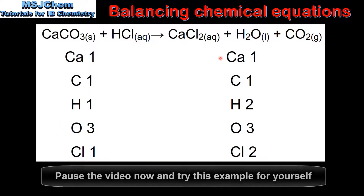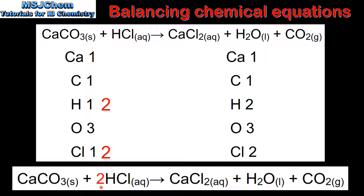In the products we have one calcium, one carbon, two hydrogens, three oxygens and two chlorines. By changing the coefficient in front of the HCl from a one to a two we now have the same number of atoms in the reactants and the products.